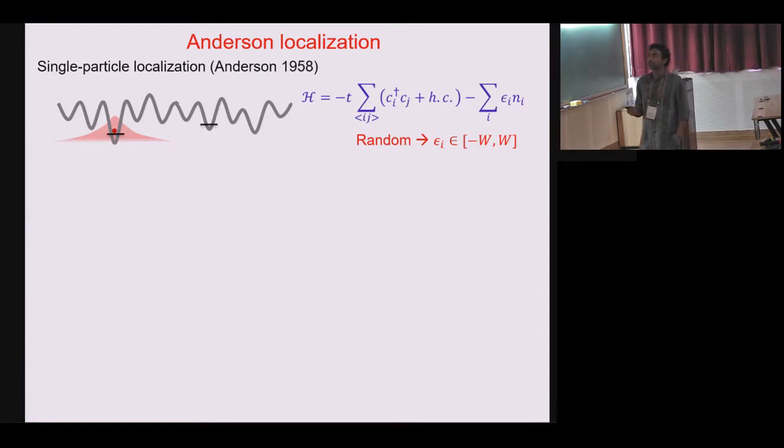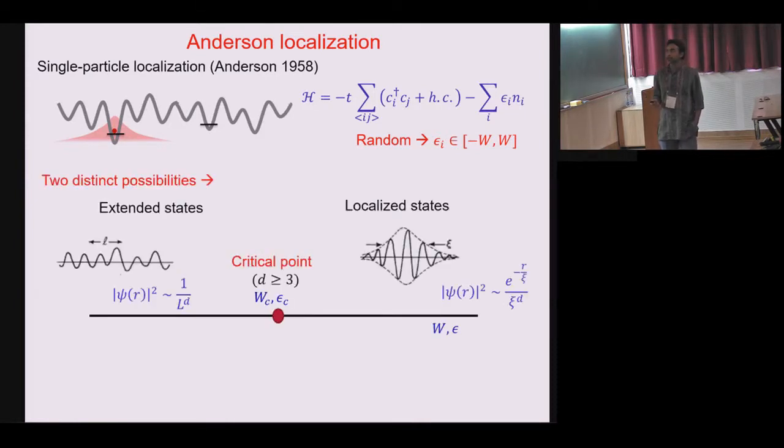The question is if you have a single particle or some wave in a random medium, what is the outcome? I'll be talking about fermionic systems, so like you take a tight binding model and then the random potential comes as the onsite random potential which is drawn from some distribution with some strength W.